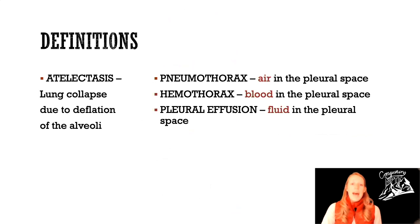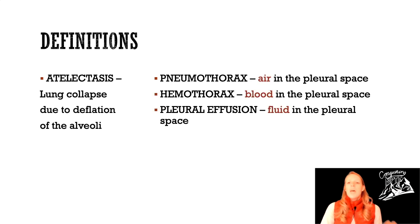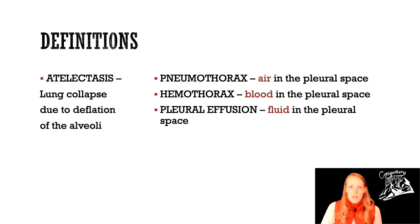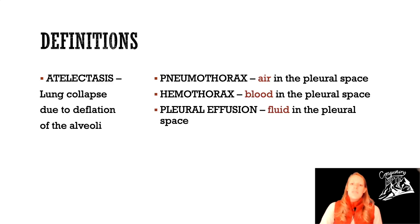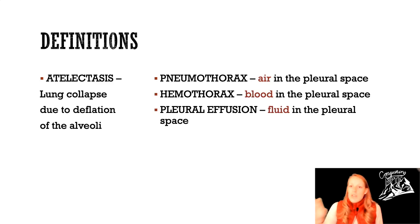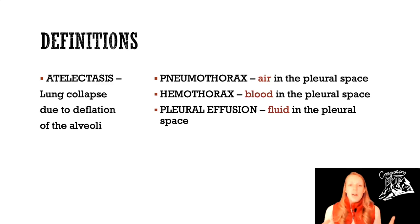We also need to define atelectasis — that random one on the left side. This is also known as a lung collapse, but it's a specific type. Basically, the alveoli collapse. There are varying degrees: it could be just certain alveoli in a portion of the lung that collapse on themselves.